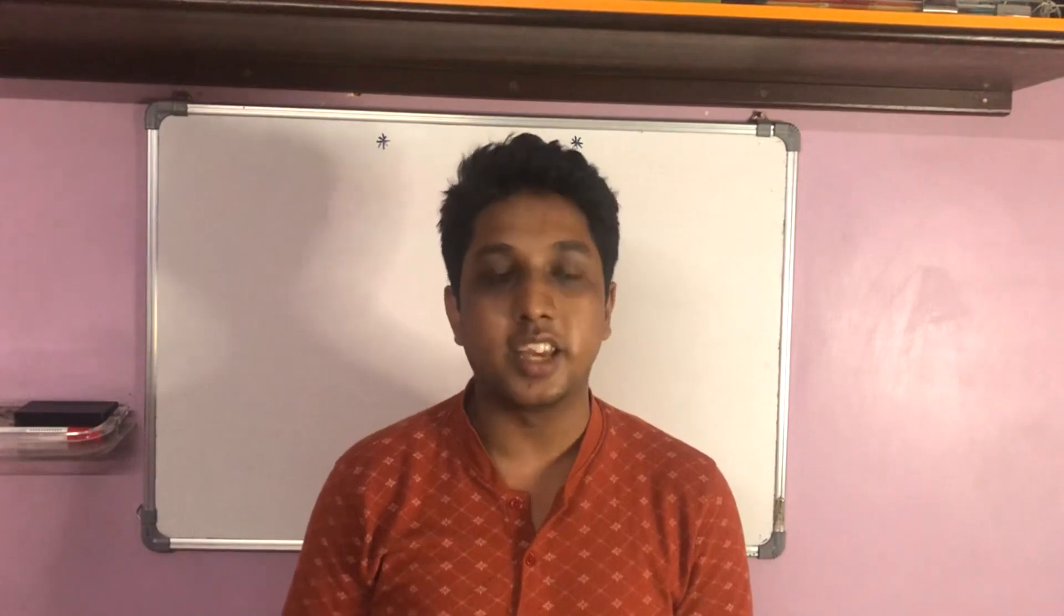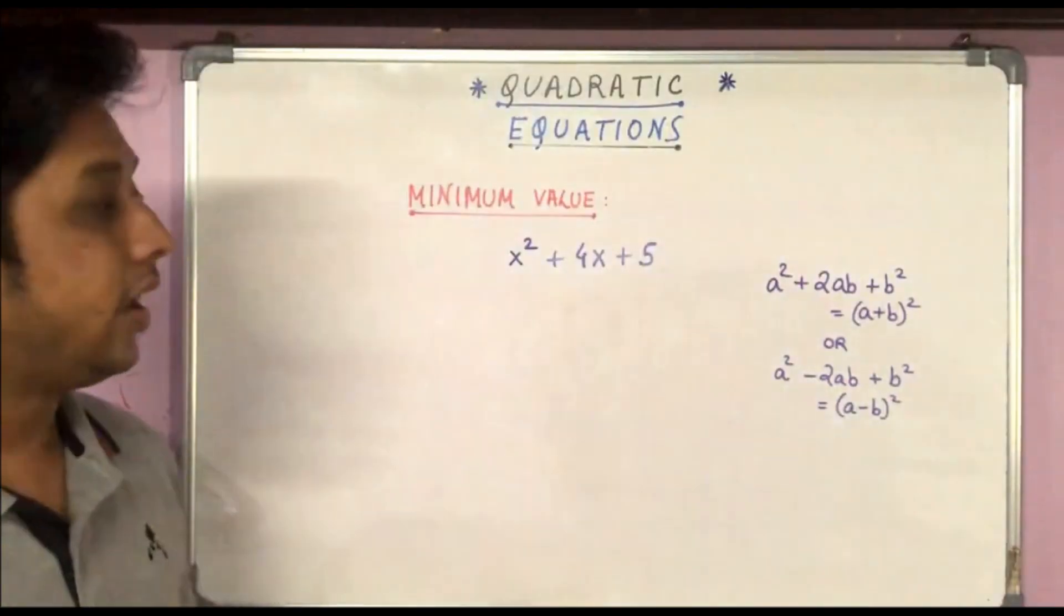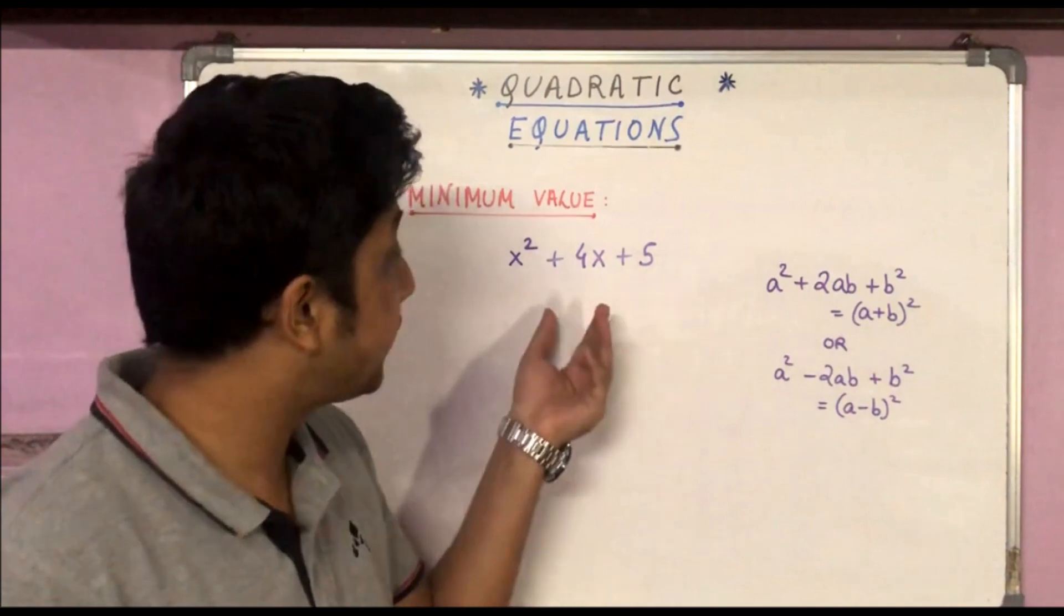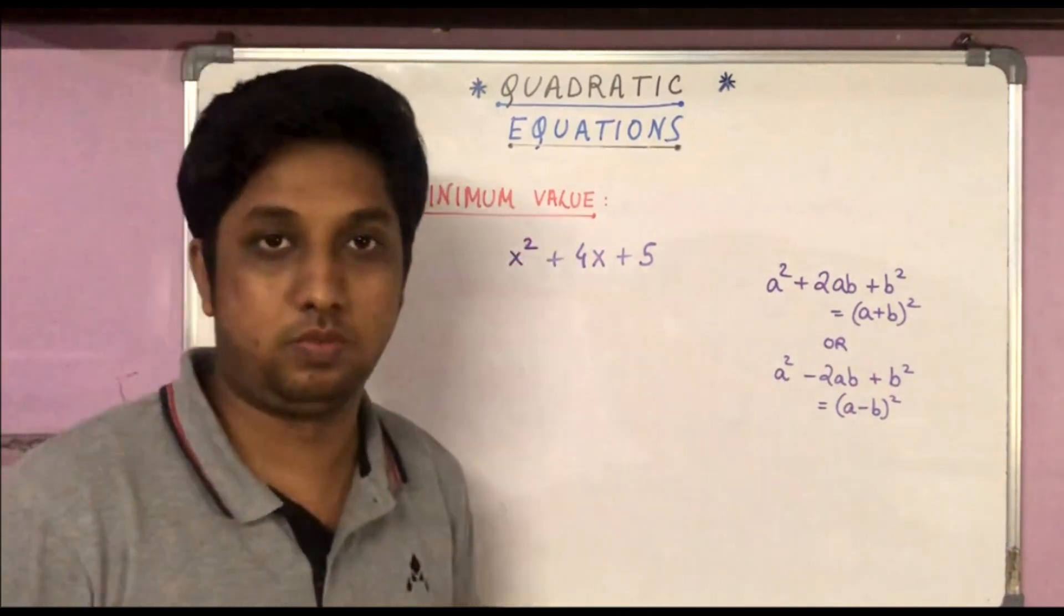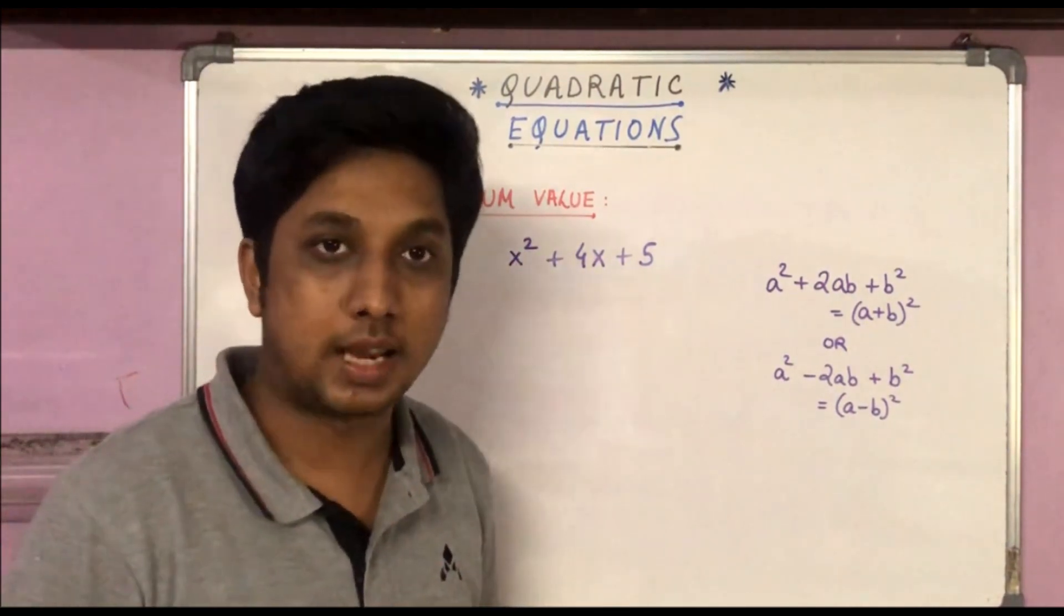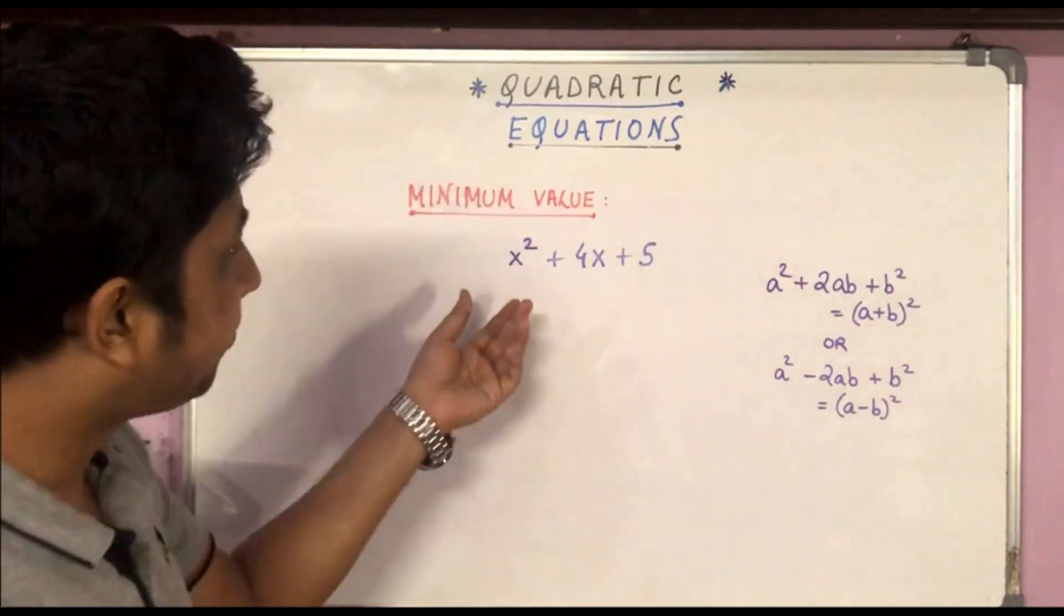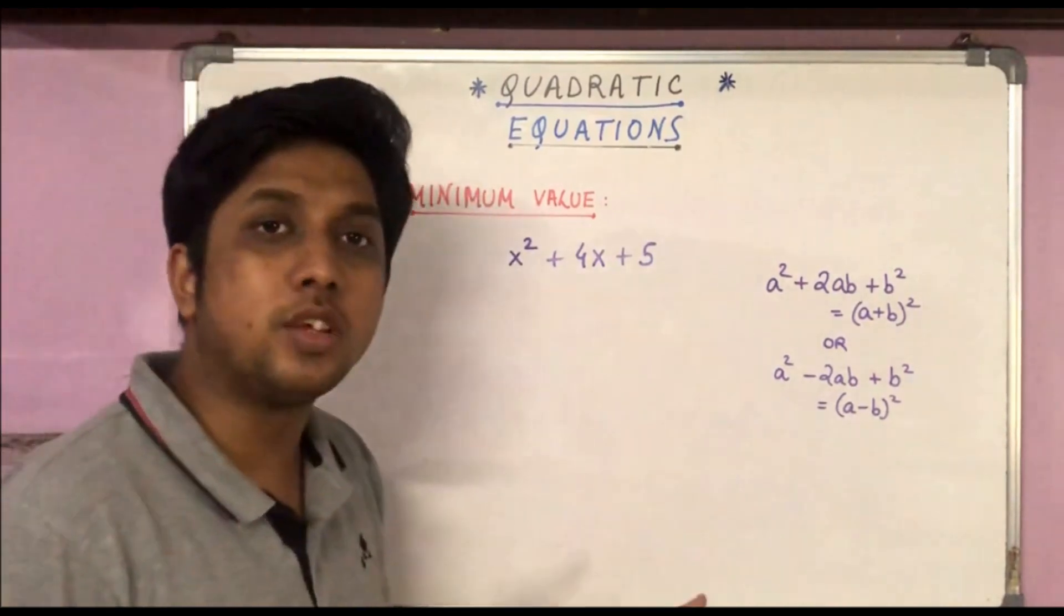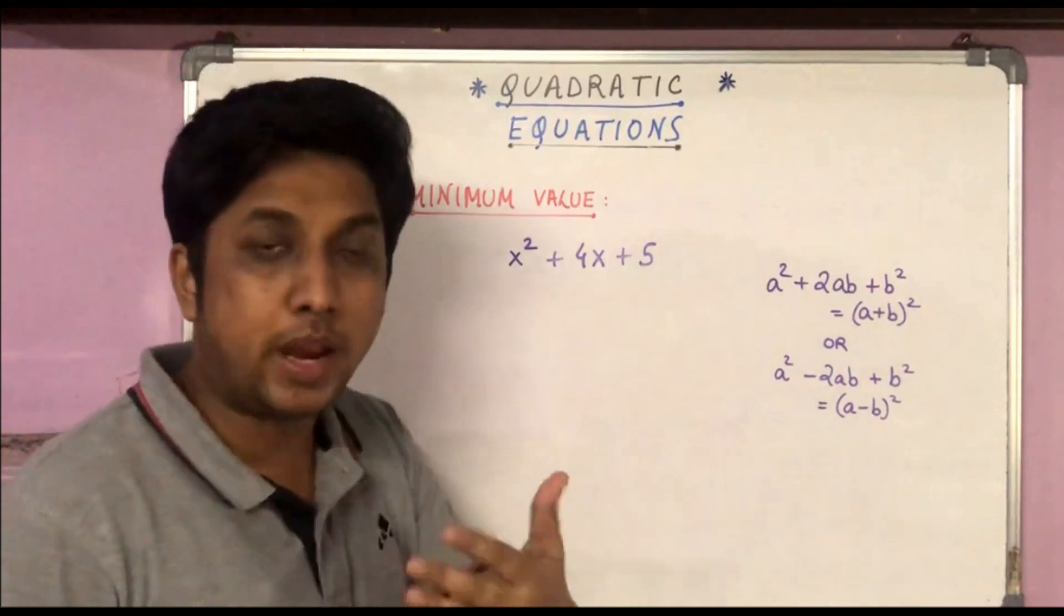In this video we can see the quadratic expression minimum value without using calculus. So let's say we have an expression x² + 4x + 5. Now the way to find the minimum value of this is to convert it into a whole square form, a perfect square form.